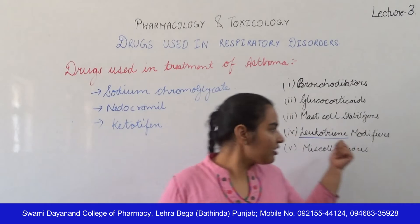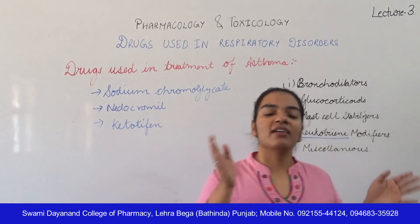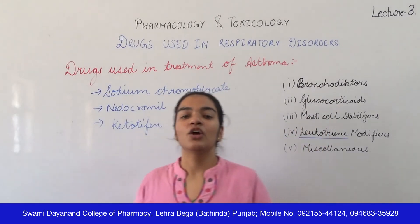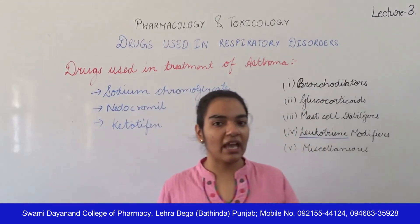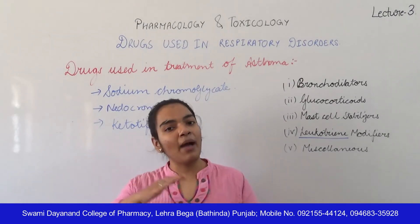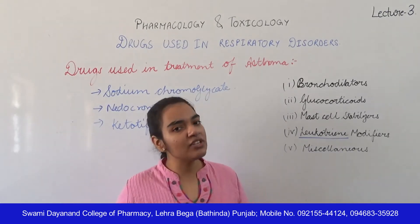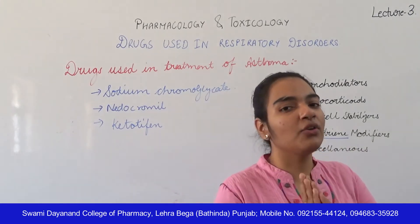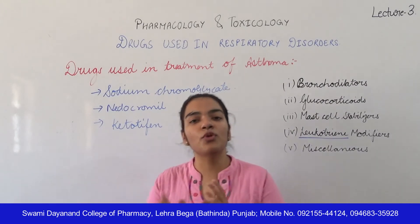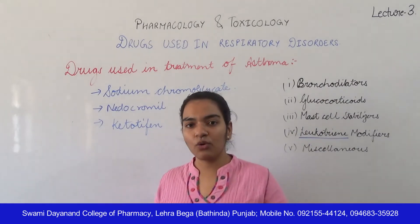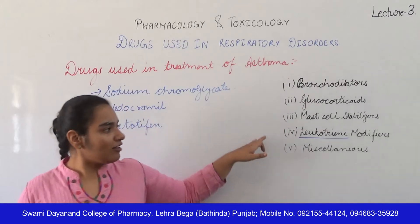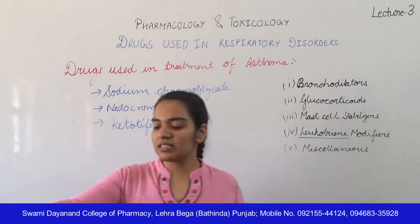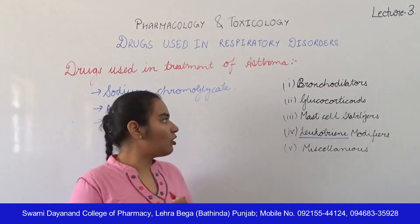Leukotriene modifiers stop the leukotriene release. When leukotriene release is stopped, asthma is better managed, because without leukotriene release, further bronchoconstriction does not occur. In leukotriene modifiers, we have specific agents: zileuton and montelukast.